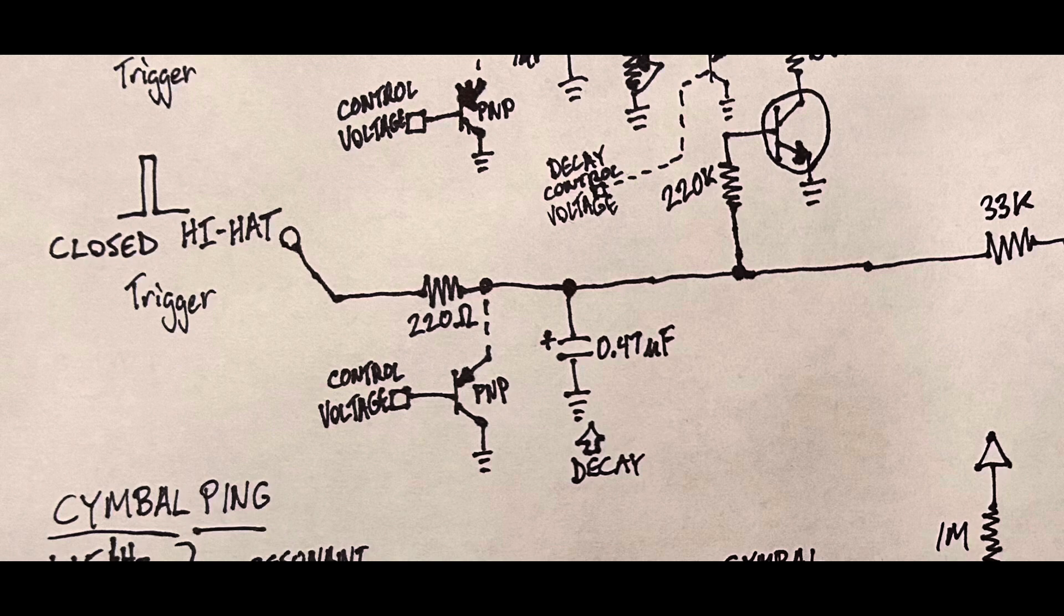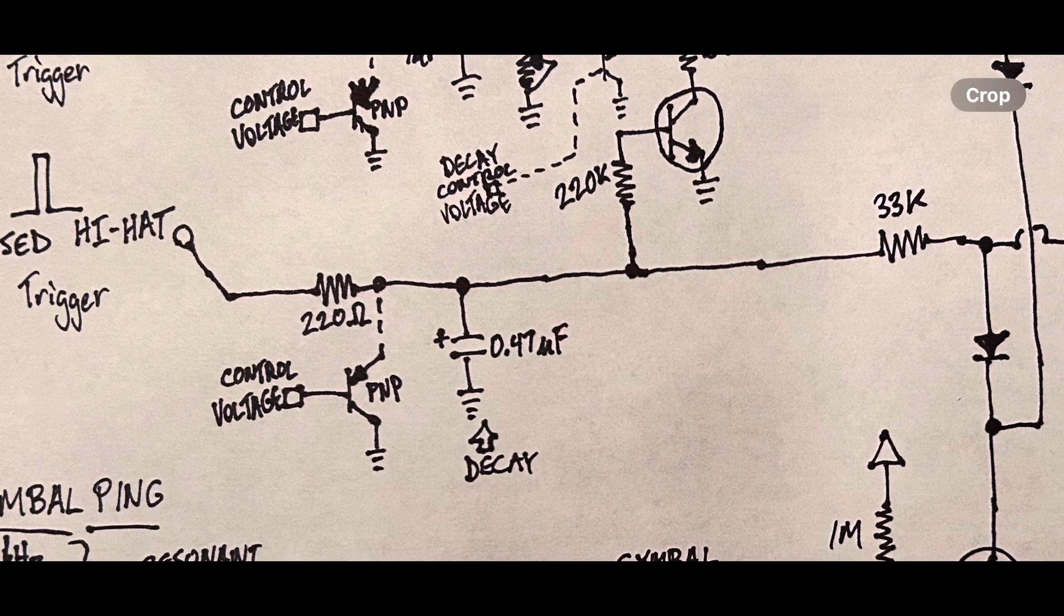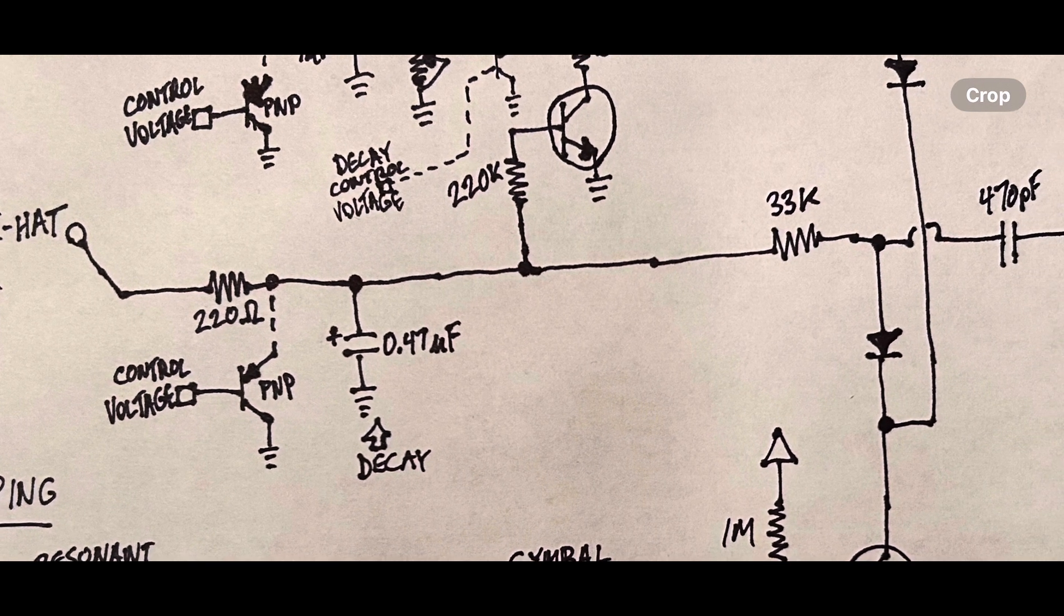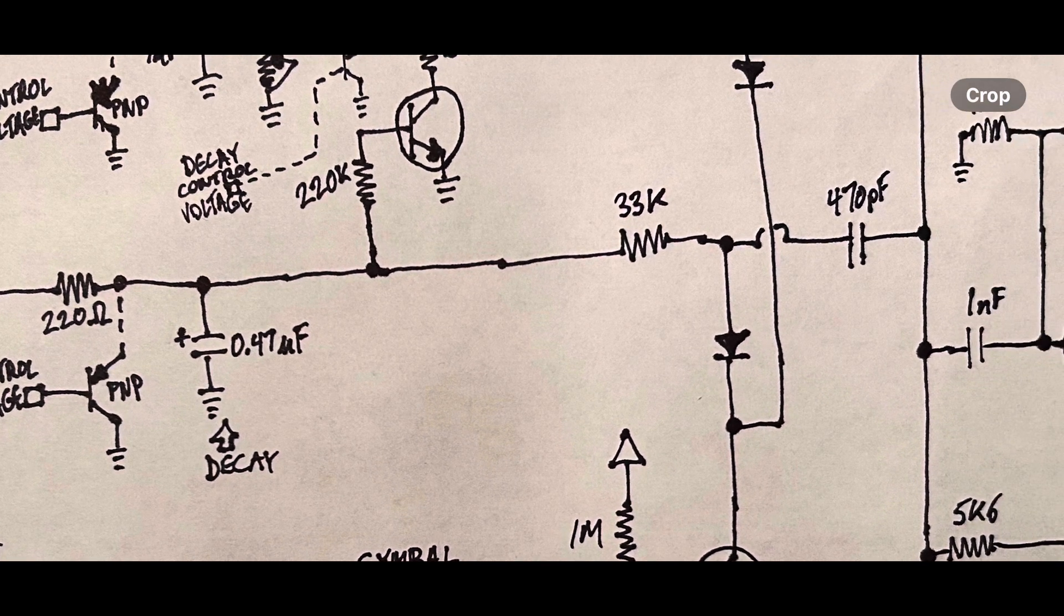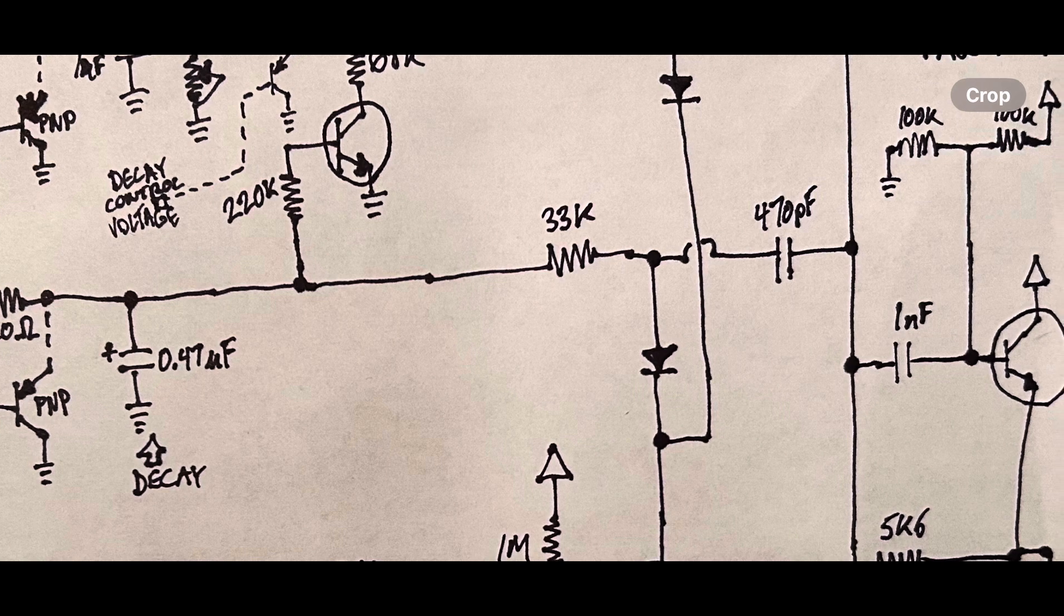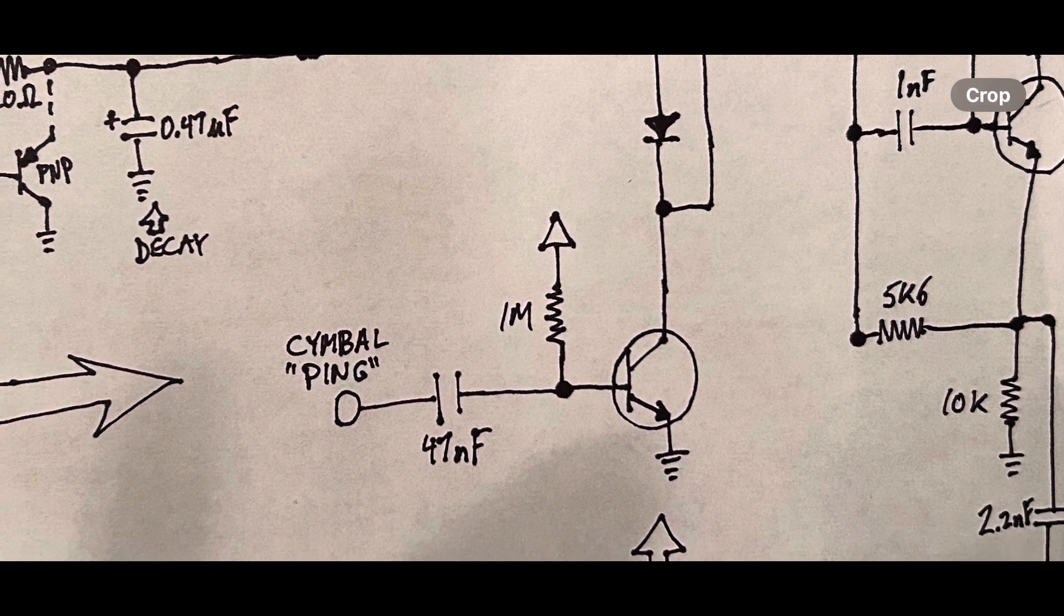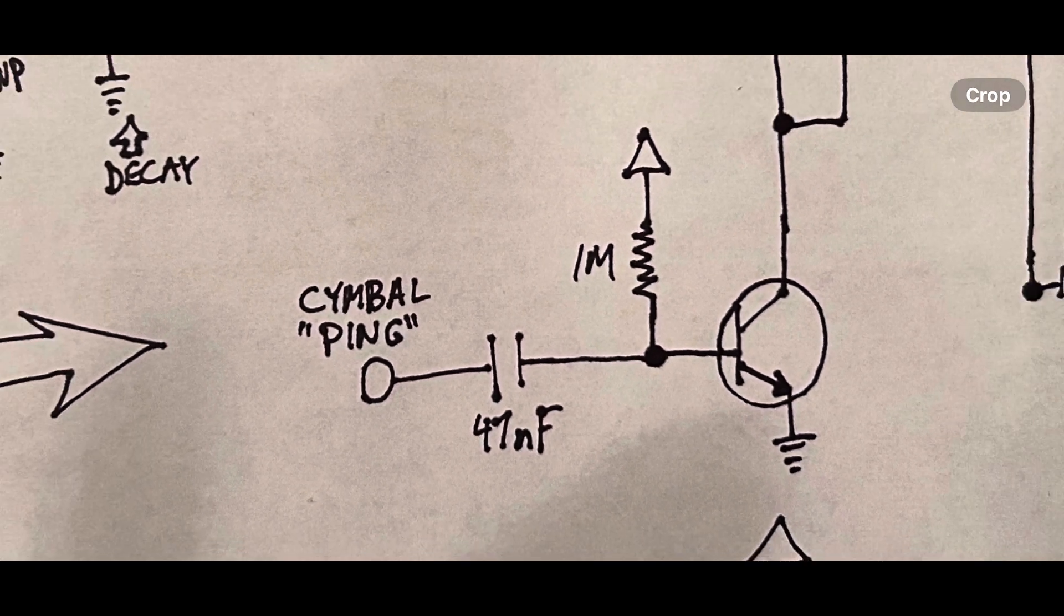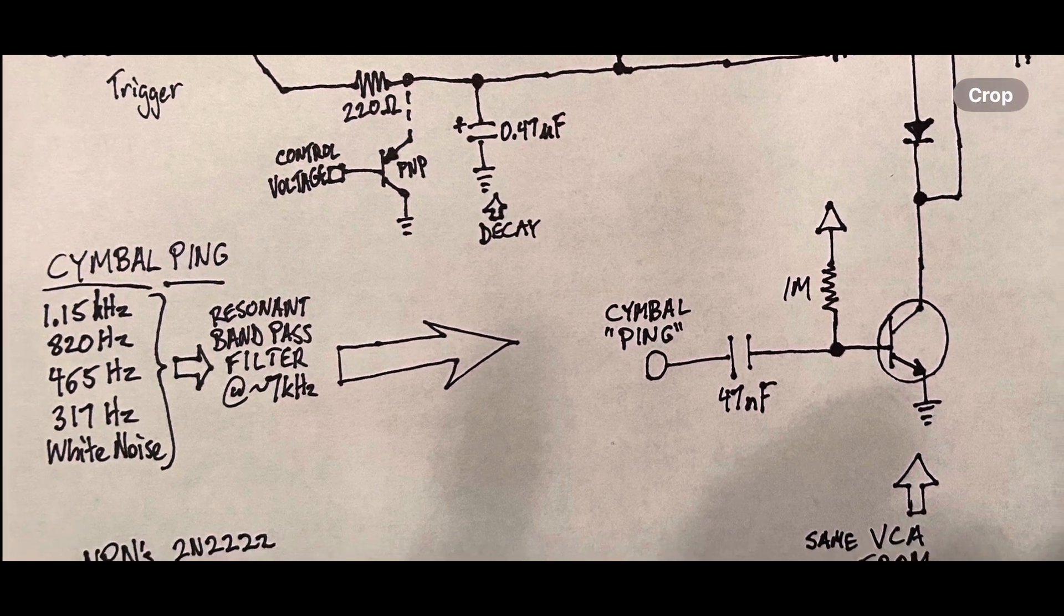So the closed hi-hat circuit is very simple. The input trigger is sent through a 220-ohm resistor, and it's got a very short decay through a 0.47 microfarad capacitor. And the output signal just goes through a diode into the same exact VCA that the cymbal uses. And it's just a cymbal ping sound that goes through there.